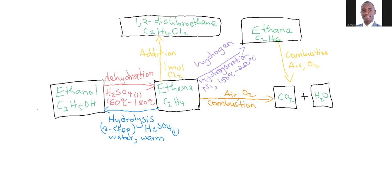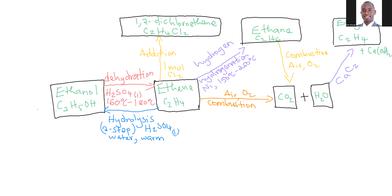If I added water to calcium carbide, then something interesting happens. If I add calcium carbide, I end up with the next homologous series, which is ethene — C2H4. And of course, this also gives us another product, which is calcium hydroxide. So here we end up with ethene plus calcium hydroxide.